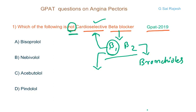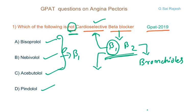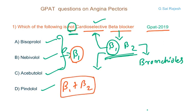The question asks which one is not cardio-selective — meaning you need to find an agent that blocks both receptors. You have drugs like bisoprolol, nebivolol, acebutolol, and pindolol. Out of the four, bisoprolol, nebivolol, and acebutolol are cardio-selective — they selectively act on beta1. It is not absolute selectivity; more preferentially they block beta1, but there is still a little blockade on beta2. Whereas pindolol blocks both beta1 and beta2 receptors. So the answer is pindolol.